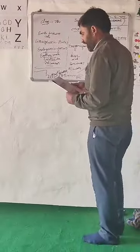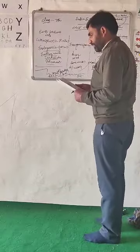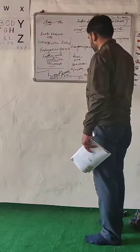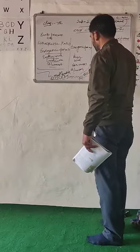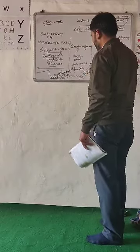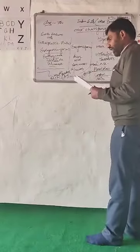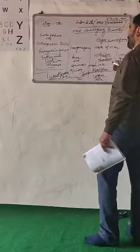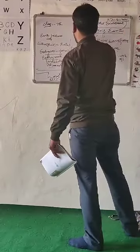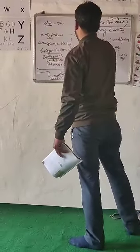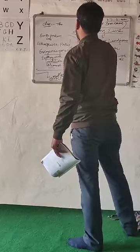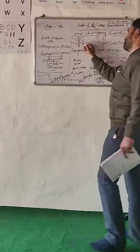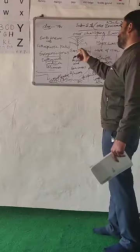As the river approaches the sea, it begins to break up into a number of streams called distributaries. The river distributes itself into these branches near its mouth.